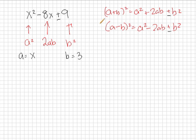So if this is a perfect square, we're going to be using this second formula here, and our a is going to be x, and our b is going to be 3. So if this is a perfect square, it should be x minus 3 squared.